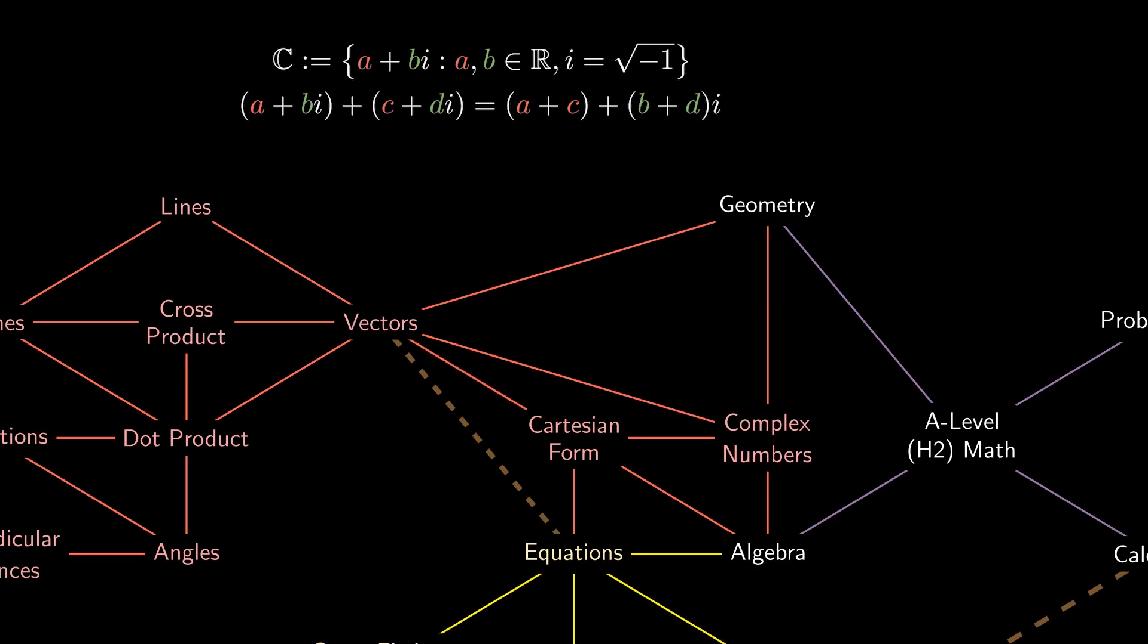Using some calculus, we can obtain the exponential form of the complex number from its cartesian form, and exploit the exponential property to obtain a very succinct multiplication of complex numbers property.